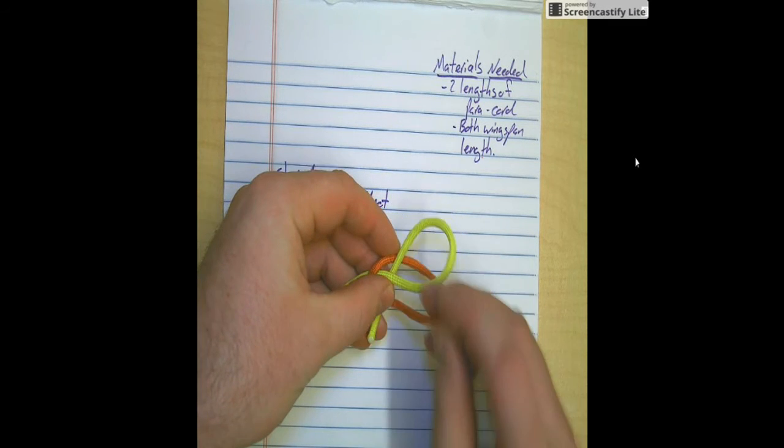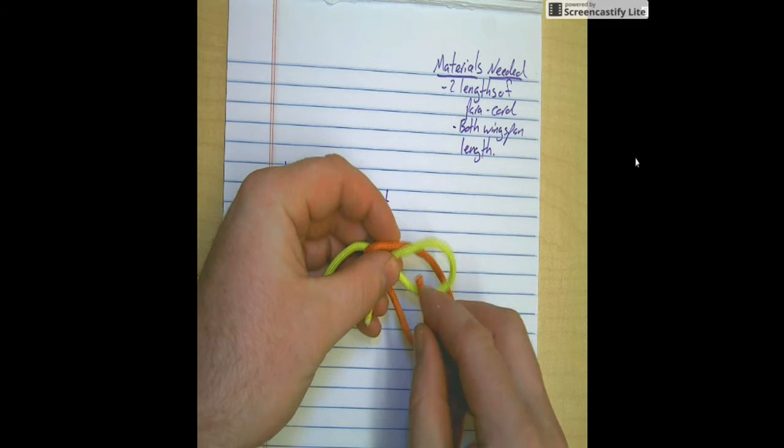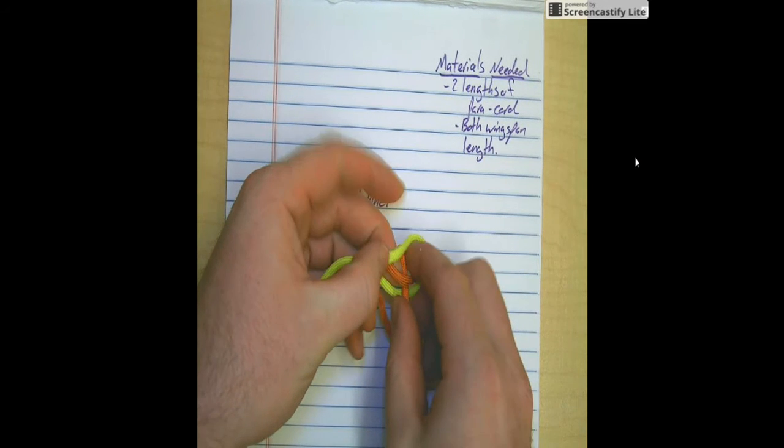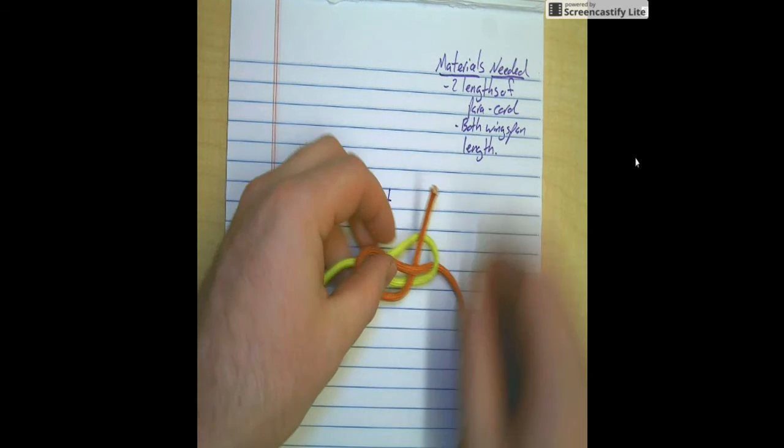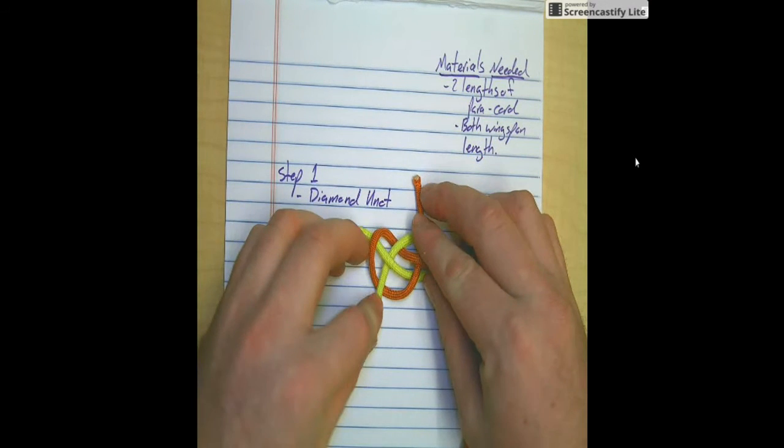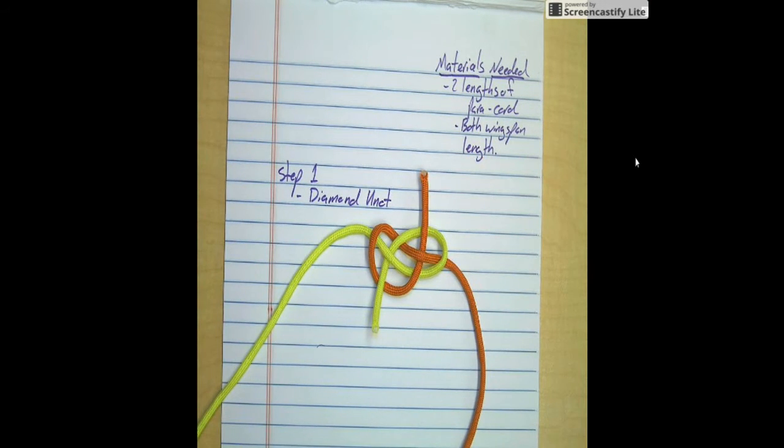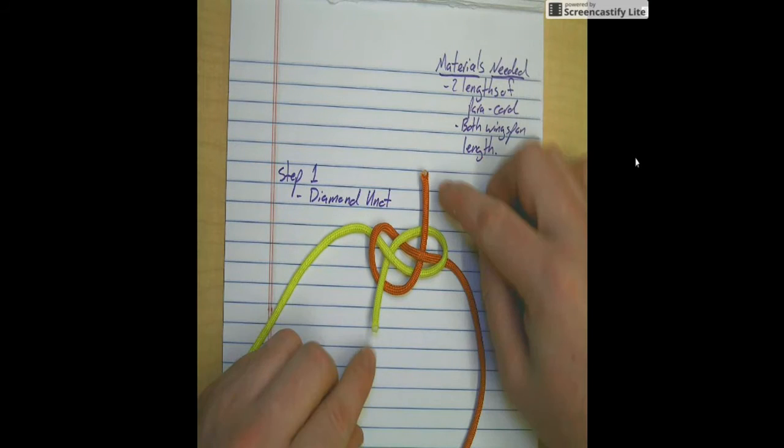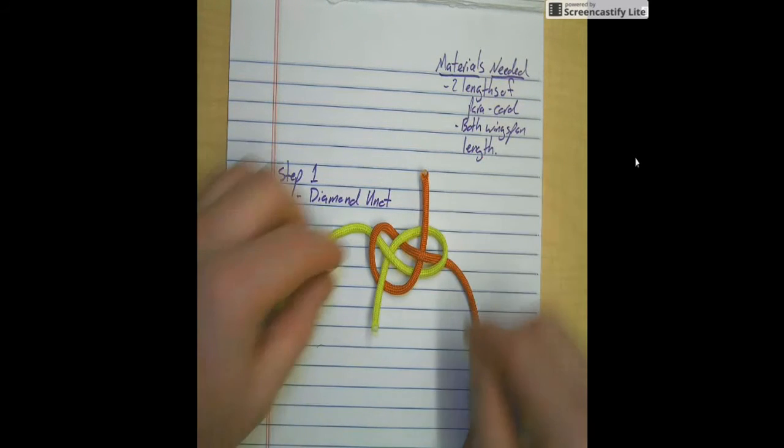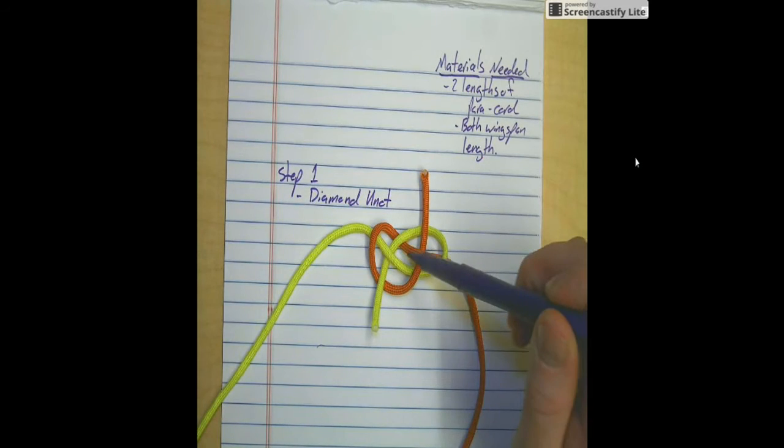You're going to finish this part with going through the loop, underneath and around itself and come out on the other end. The last step is both of these tails are going to come up and go through the center point.